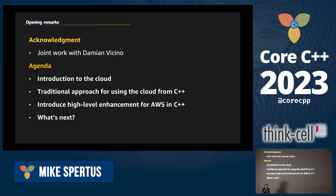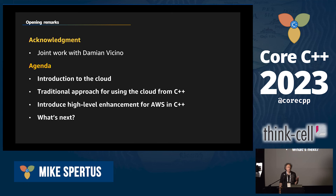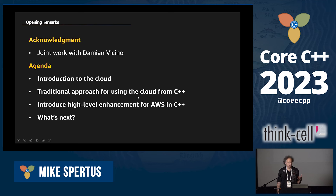I want to begin with an acknowledgement that this is joint work with Damian Ficino. I'm going to begin not by talking about C++, but by talking about the cloud. First, I'm going to talk about the traditional approach for using the cloud, which for me means AWS in C++. Then we're going to introduce the new high-level enhancements for AWS and C++ and talk about where we are and what's next.